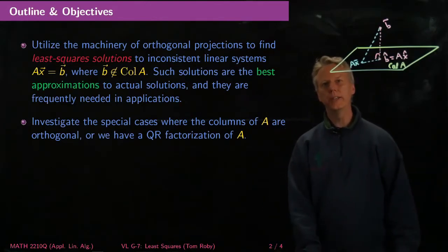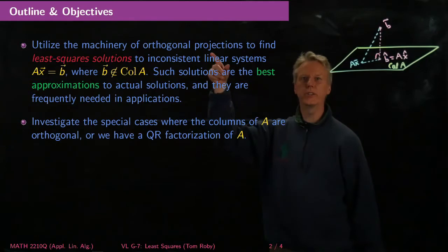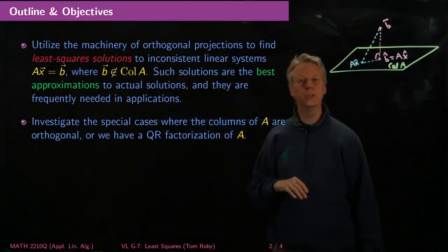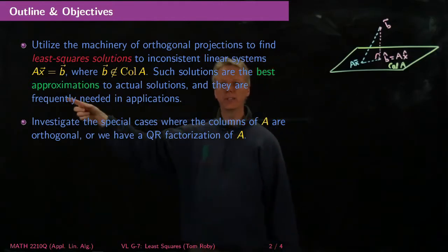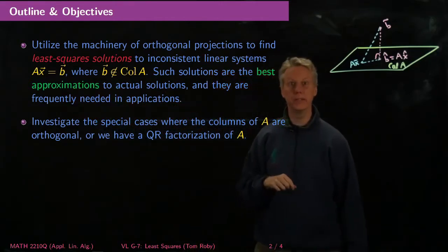So we'd like to utilize the machinery of orthogonal projections that we've built up to find so-called least square solutions to inconsistent linear systems, Ax equals b, where b is not in the column space of A.